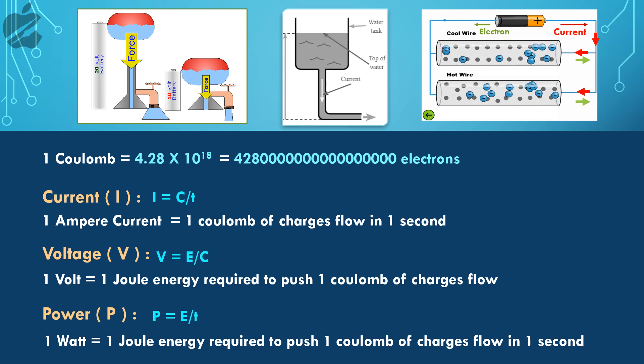You can see in the image, water representing electrons and flow means current, and increased height means increased force, i.e. voltage.